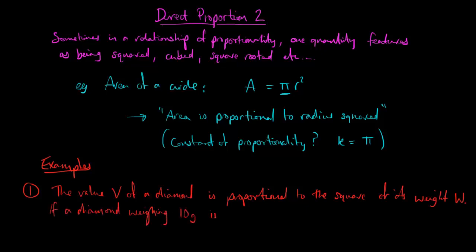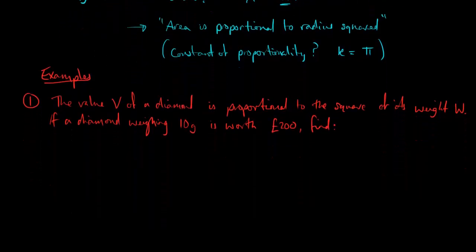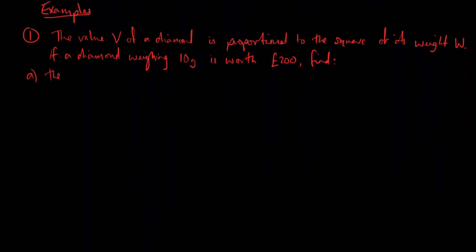And we're told that a diamond weighing 10 grams is worth 200 pounds. And we're asked to find, first of all the value of a diamond weighing 30 grams and then the weight of a diamond which is worth 5,000 pounds.